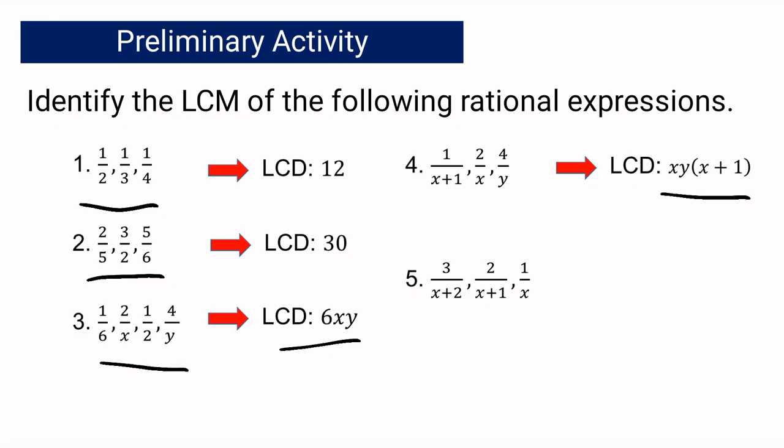For the fifth one: 3 over (X plus 2), 2 over (X plus 1), and 1 over X — our LCD is X multiplied by the quantity (X plus 1) multiplied by the quantity (X plus 2).